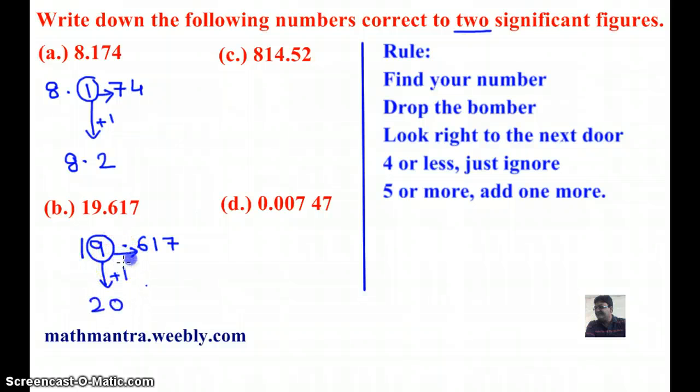The next door number is 1, again less than 4, so just ignore. My answer is 19.6.